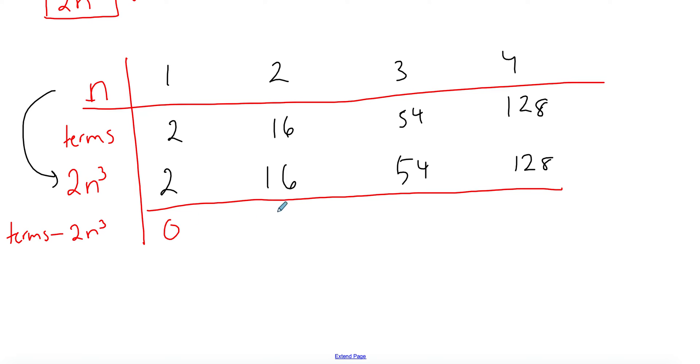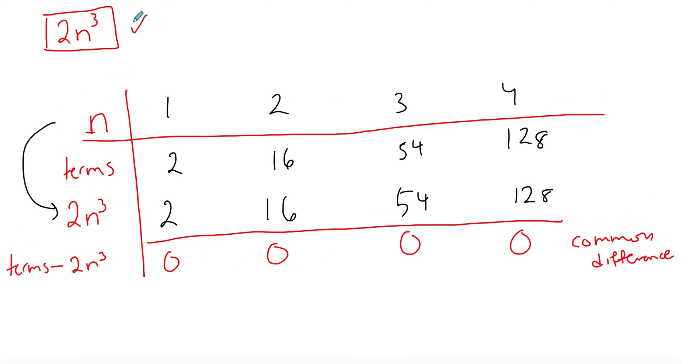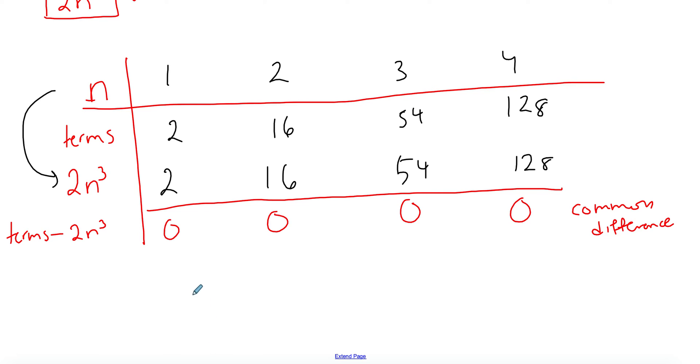What we get is 0. This is a common difference, and whatever you got here, that's what you add on top of what you got in the beginning. In this case it's 0, which means our nth term formula is 2n³. That's the easy case for now.